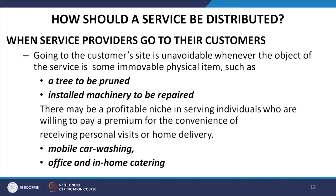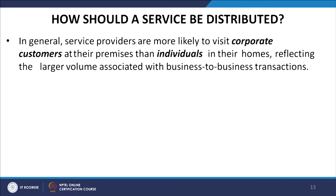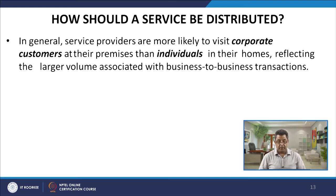When service providers go to the customers, going to the customer site is unavoidable whenever the object of the service is some immovable physical item such as a tree that needs to be pruned or installed machinery to be repaired. There may be a profitable niche in serving individuals who are willing to pay a premium for the convenience of receiving personal visits or home delivery — for example, mobile car wash, where they come to wash your car at your place, and office and in-home catering. In general, service providers are more likely to visit corporate customers at their premises rather than individuals in their homes, reflecting the large volumes associated with business-to-business transactions.